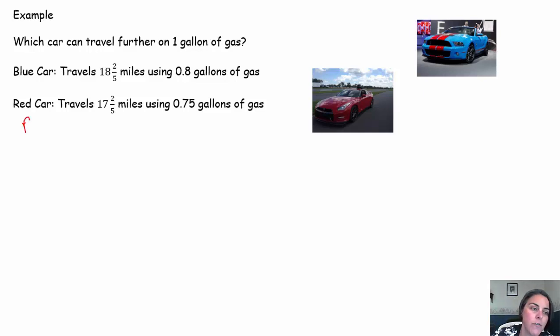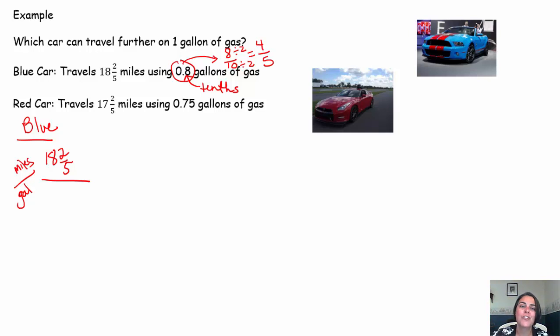All right. So we want to know who can travel further on one gallon of gas. Let's take a look at the blue car. The blue car can travel 18 and 2/5 miles. So we'll do miles per gallon. And it's on 0.8 gallons. We could either convert this to a decimal, but I'm going to choose to convert this one to a fraction. 8 is in the tenths place. So 0.8 is 8 tenths. I could also simplify this dividing numerator and denominator by 2. 8 divided by 2 is 4. 10 divided by 2 is 5. So 0.8 is actually the same as 4/5. So 18 and 2/5 miles on 4/5 of a gallon of gas.